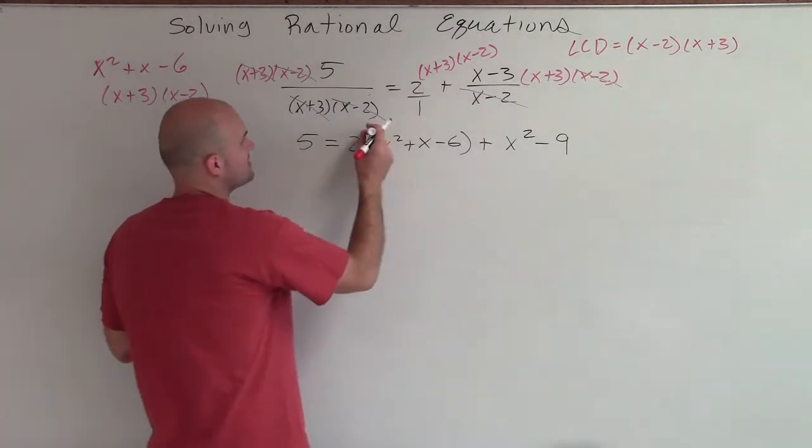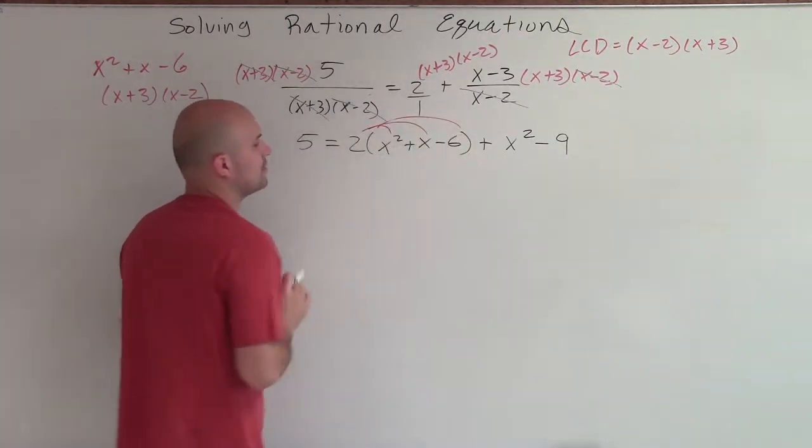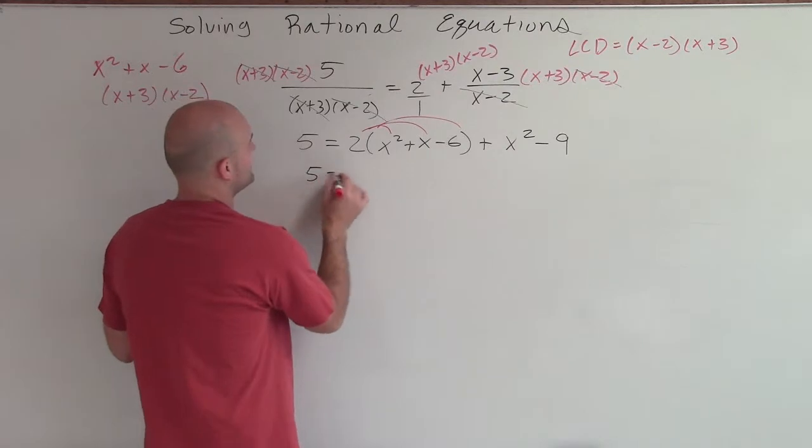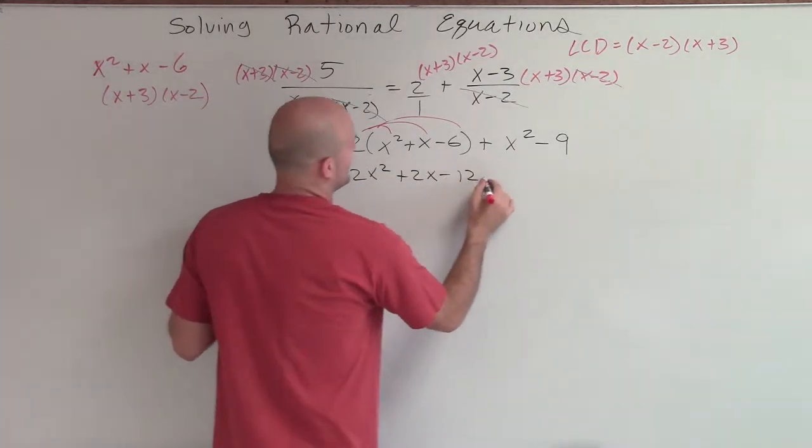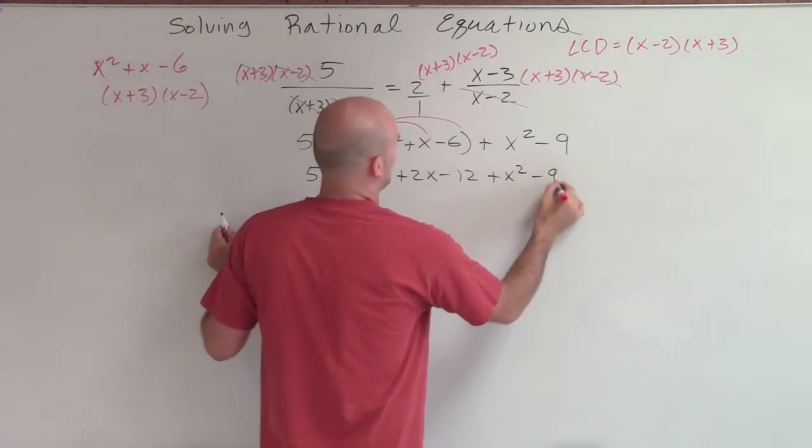Now, I can apply distributive property, because remember, we're trying to solve for x. So we have 5 equals 2x squared plus 2x minus 12 plus x squared minus 9.